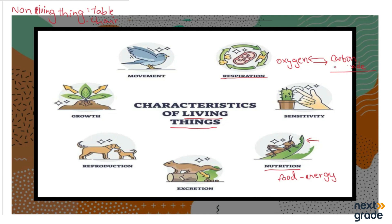Another quality of living organisms is that they reproduce. Reproduction is the process by which living things make new life. For example, a chicken lays eggs and then the process of new life begins. In the case of plants, seeds are used for reproduction so that new plants can grow.